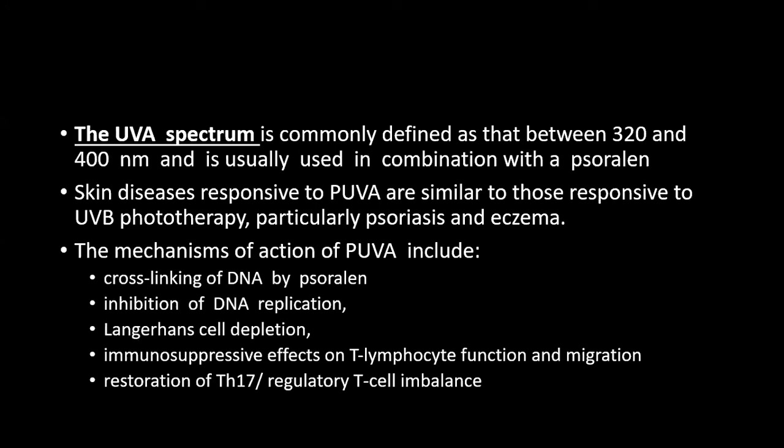The UVA spectrum is commonly defined to lie between 320 to 400 nanometers. UVA radiations are usually used in combination with psoralens, and that combination of psoralens with UVA makes it PUVA therapy. The skin diseases responsive to PUVA are similar to those responsive to UVB therapy — in particular, psoriasis and eczema.